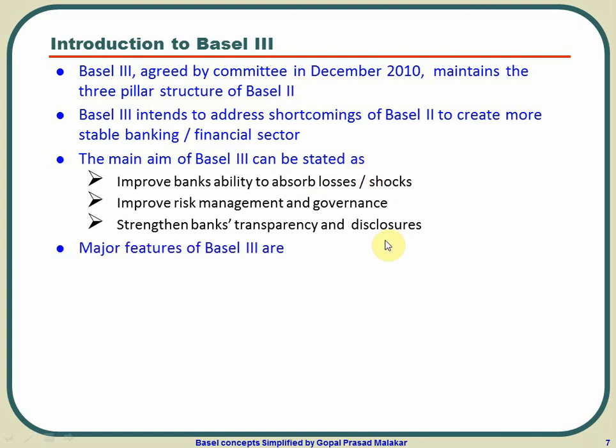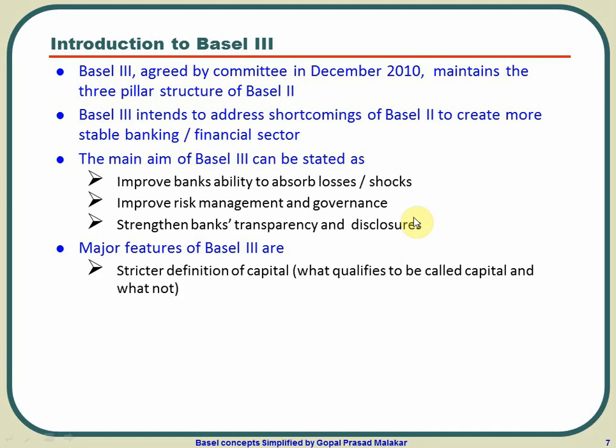The major features of BASEL 3: first, it provided a stricter definition of capital — what qualifies as capital and what does not became more clear. Second, it raised common equity from the 2% norm in BASEL 2 to a minimum of 4.5%. Common equity is the first level of support available to the firm to absorb losses and shocks, so increasing it to 4.5% definitely enhances the firm's ability to absorb these things.